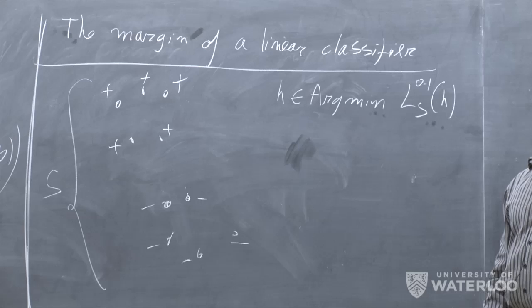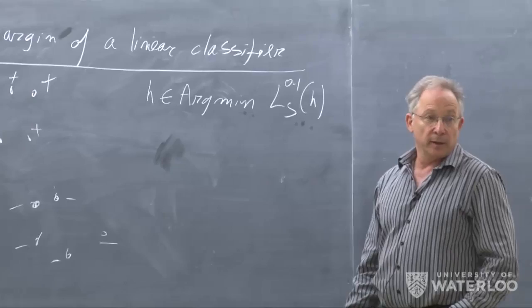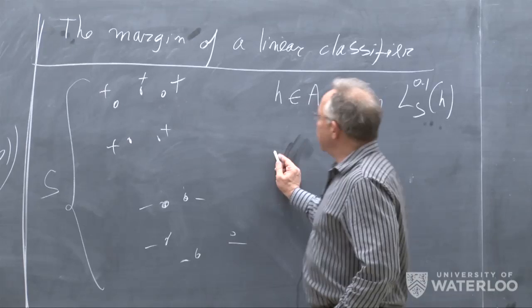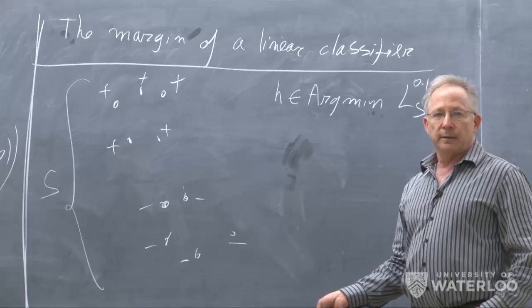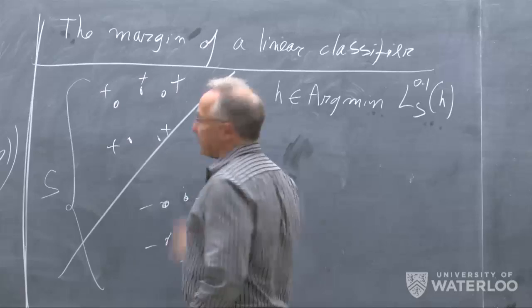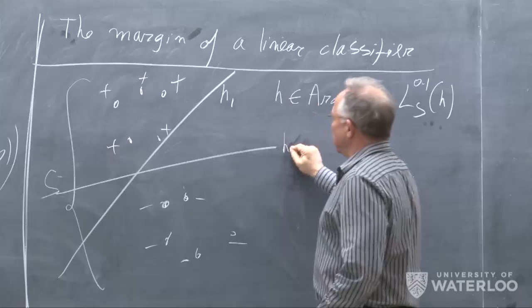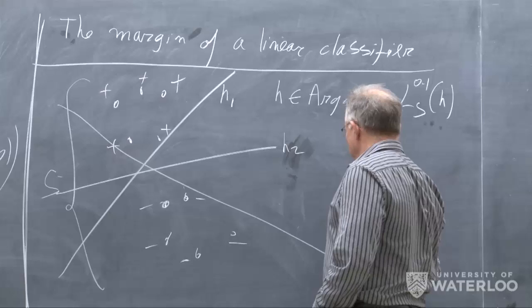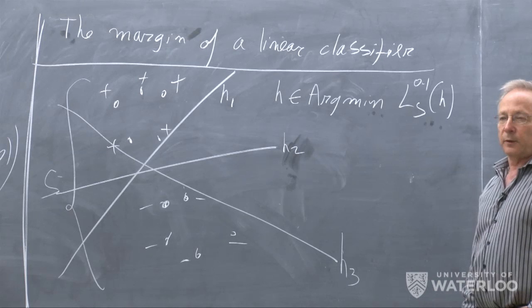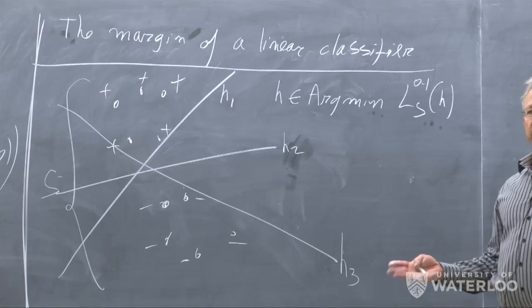The minimal loss is 0, because we have classifiers that make no mistakes. But the point is that there are many classifiers with 0 error. I could pick H1, H2, or H3 as a minimizer of the loss — all of them have 0 error. The question is which of them makes more sense to pick, given some unknown distribution from which we saw a sample with positive and negative points.